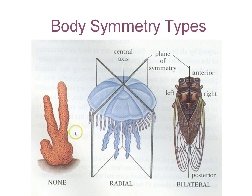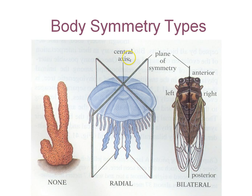Body symmetry: there's only one animal with no symmetry at all, and that's phylum Porifera — the sponges. Radial symmetry means you can cut through a center point and every slice will be equal, like cutting a pizza. The cnidarians have true radial symmetry. The only other animal with radial symmetry is the starfish, but as a larva they have bilateral symmetry; they only gain radial symmetry as an adult.